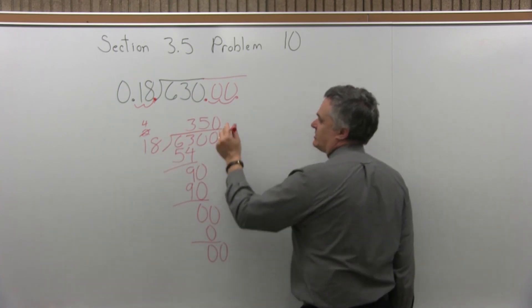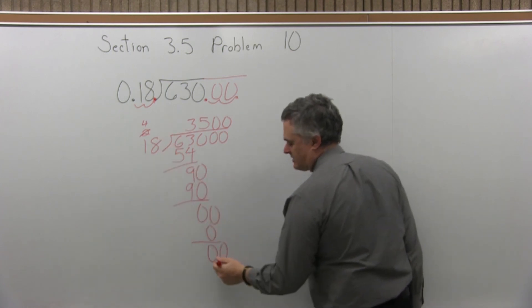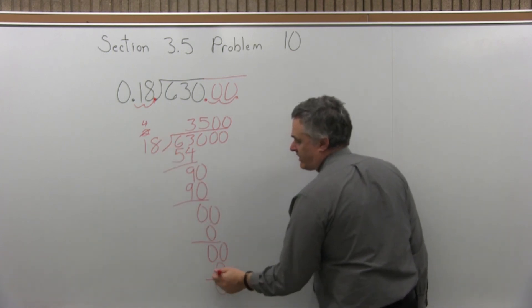Bring the last digit down next to the answer I just got and I get 0 again. Something times 18 gets you to 0, it's times 0. 0 times 18 is 0. It goes in evenly.